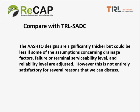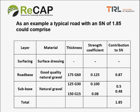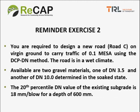The AASHTO method is very good because of its use of reliability and the ability to change the terminal serviceability level, making it a very versatile method. To achieve the 1.85 structural number, we need reasonably good quality natural gravel. We have material of CBR 60 for the road base and natural gravel of CBR 30 for the sub-base. That is a typical design that will carry our traffic for the 15-year design life. That is the end of exercise one.